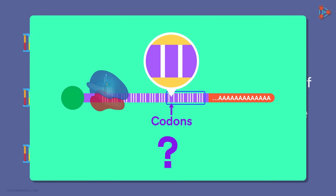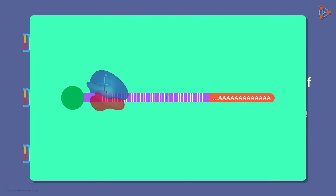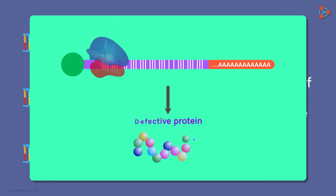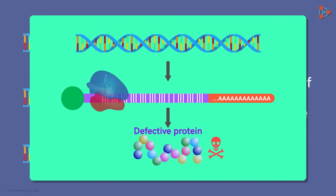What will this result in? The altered gene will give rise to a different protein than the usual one, and there are chances that this defective protein turns out to be a harmful one. So any change in the DNA or in the genes can cause a shift in the reading frame, resulting in an altered protein being produced. This was the first type of mutation.